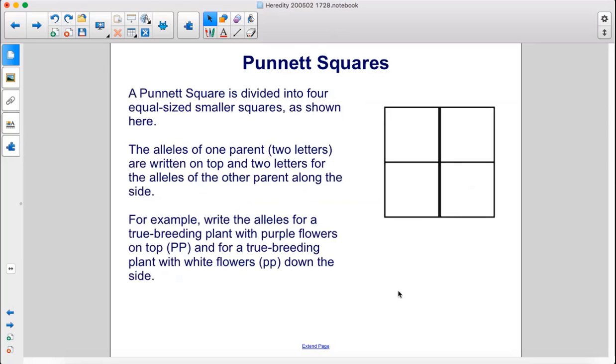A Punnett Square is divided into four equal-sized smaller squares as shown here. The alleles of one parent, so two letters, are written on top and two letters for the alleles of the other parent along the side. For example, write the alleles for a true breeding plant with purple flowers on top, and for a true breeding plant with white flowers down the side.